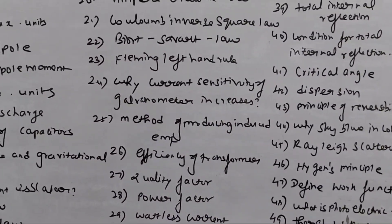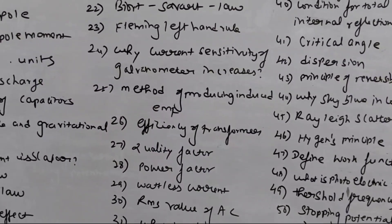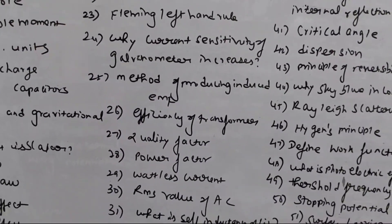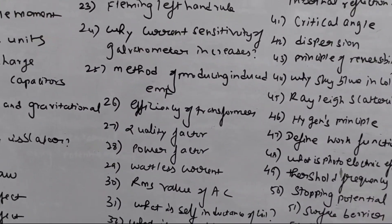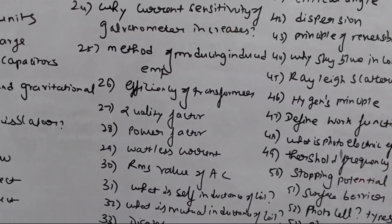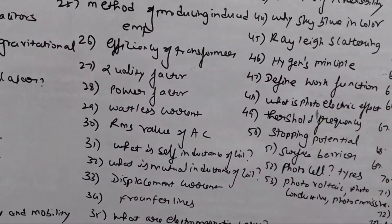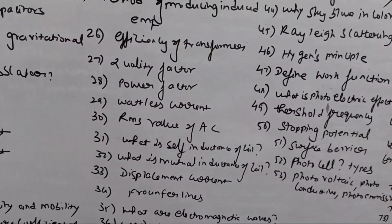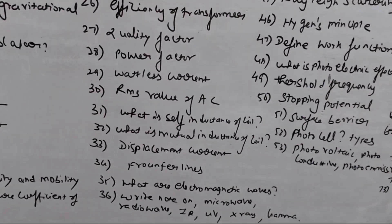This is the 3rd lesson into the 4th lesson. Method of producing EMF, efficiency of transformer, quality factor, power factor, wattless current, RMS value — these are very important. What is self-inductance of a coil, mutual inductance of a coil. That's lesson 5.